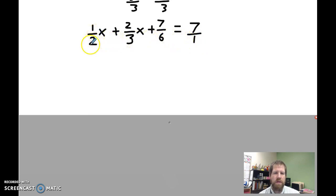I'm going to do 2 times 3, which would be 6. And then I have another 6 here, and 1 that goes into 6. So 6 will work for all of these. So I'd multiply each term by 6.